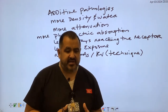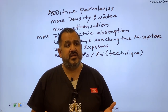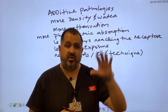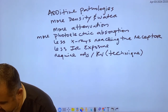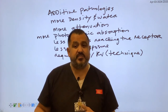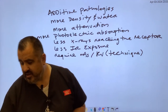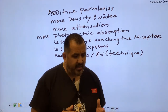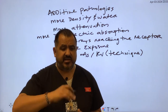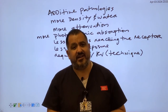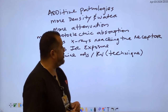As a rad tech, you have to know your pathologies. There's a book we use — the Principles of Radiographic Imaging. On page 219, you'll find a summary of all the pathologies. I do prefer this book when studying for the ARRT exam. Let's think about some common additive pathologies — the list is huge — but let's focus on some key ones.